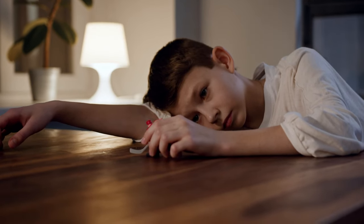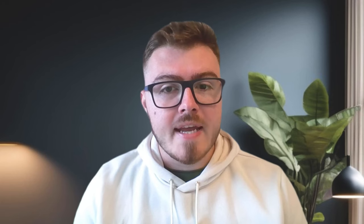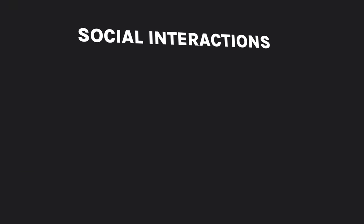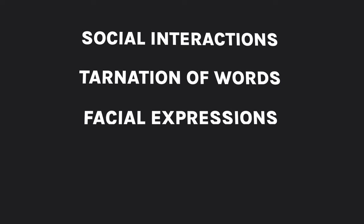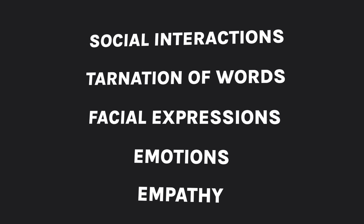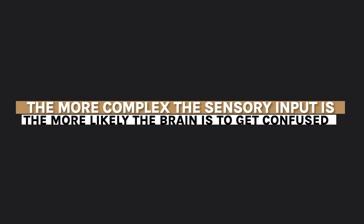With autism specifically, not only is some sensory input not being processed and understood correctly, but there's a higher level of sensory input in the form of social interactions — things like tonation of words, facial expressions, emotions, and empathy. These are all forms of sensory input, but they're very complex. And as you can imagine, the more complex the sensory input, the more likely the brain is to get confused in its ability to process these things.